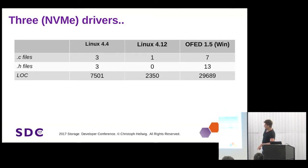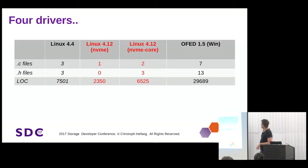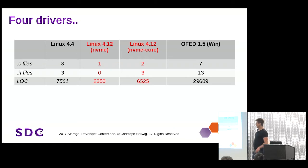Moving to NVMe drivers, things look a little different. Going back to Linux 4.4, our NVMe driver was about 7,500 lines of code split over a few files. In 4.12 it got a lot smaller, but that's because at that point we actually had two drivers — just the one driving the PCIe device. We're doing pretty good compared to other NVMe drivers. The open source OFED Windows driver is getting closer to our fiber channel monster, and it actually has a lot less functionality.